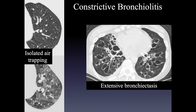The spectrum of constrictive bronchiolitis goes from isolated air trapping as the only abnormality — the mildest manifestation — to severe constrictive bronchiolitis present for many years that can eventually produce extensive large airways disease with cystic bronchiectasis and airways inflammation. These two cases show the full spectrum from most mild to most severe.